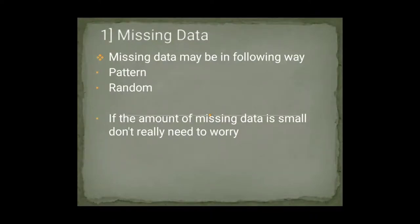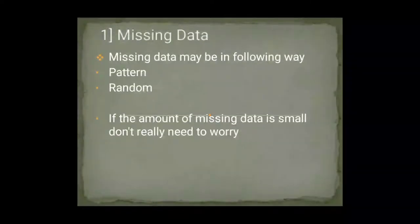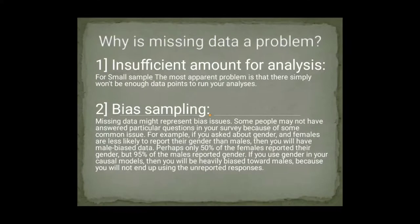Missing data is data for which the information we have is incomplete. If information is incomplete, I will not be able to analyze the data, so it is very important to find out missing data. Missing data can be in the form of a pattern — a pattern is continuing and it is not recovering ahead — or it can be in random form. If the amount of missing data is very small, we can proceed without finding out the missing data. Missing data is a problem because first, there is an insufficient amount for analysis. If data is missing, we will have insufficient amount — in a small sample it won't be too much of a problem, but in a large sample there will be a problem, and even in a small sample if data is insufficient, we will need to recover it.